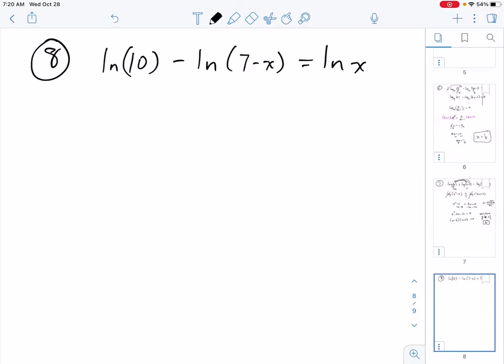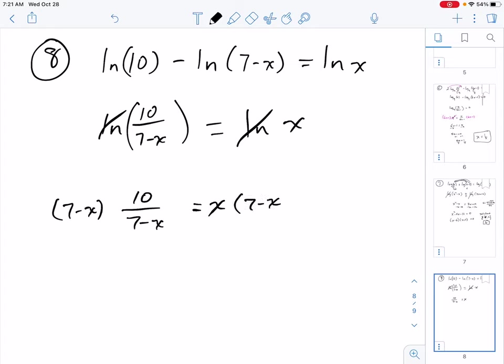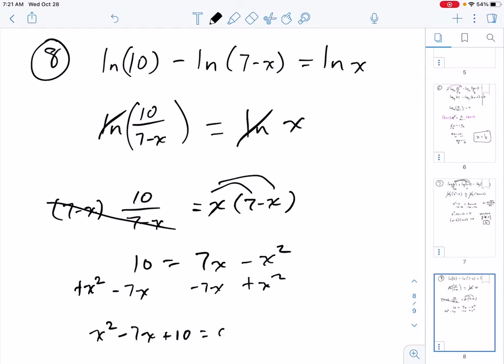Last one. We have two logs. They are being subtracted, so I'm going to combine and make one log. If the logs are equal, I can just eliminate my logs, because the stuff inside must also be equal. Multiply both sides by 7 minus x. So 10 equals 7x minus x squared. Again, it's quadratic. If it's something to the second power, that's quadratic. Easiest way to solve those is by factoring. If that doesn't work, then try the quadratic formula. I'm going to add x squared to both sides, I'm going to take away 7x from both sides, so it equals 0. And then I'll try factoring.